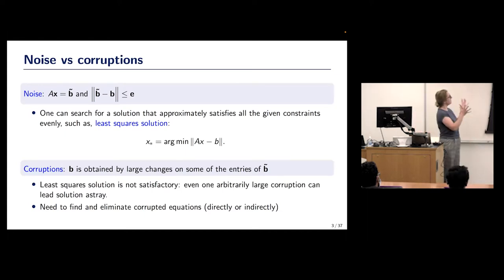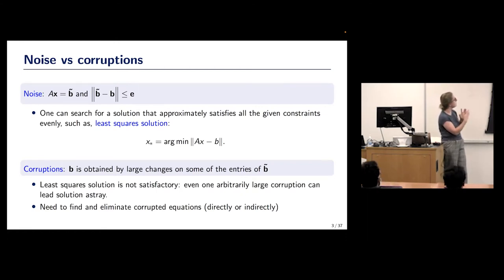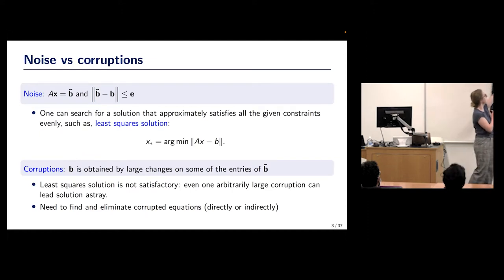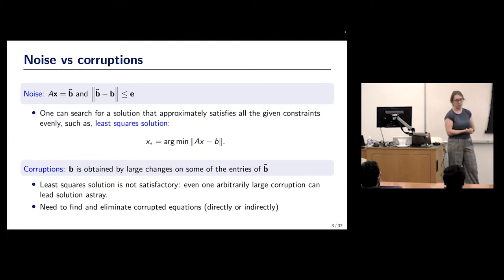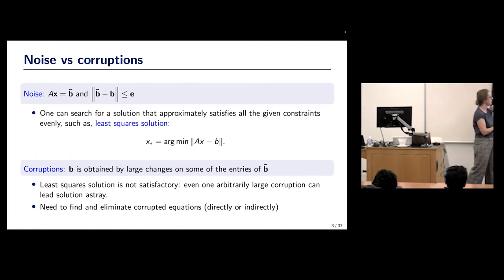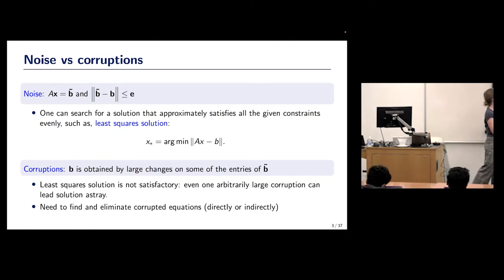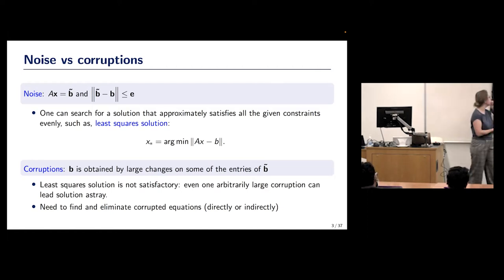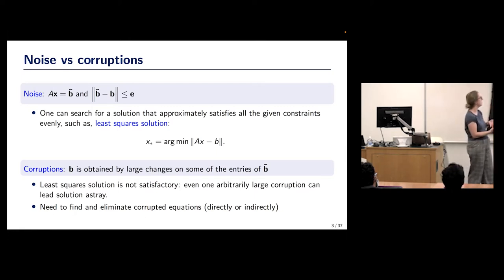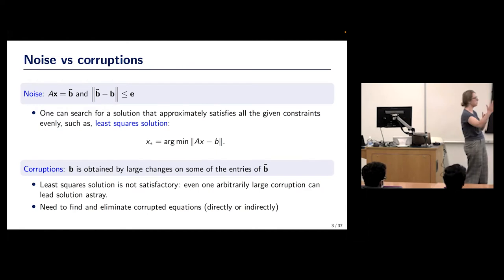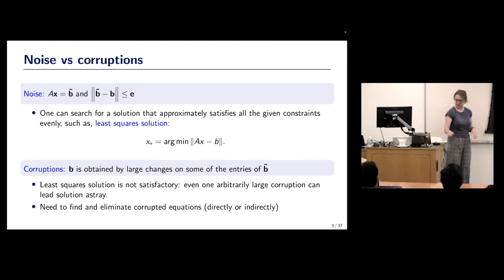That's another slide explaining again why we are not talking about least squares that much. This is how least squares appears for me: I want to solve my system and something can be wrong with it. For simplicity throughout my talk, something will be wrong only with the right-hand side. The error can be a small additive error, and then least squares is a good thing to do. But we could have sparse errors on the right-hand side — they can be adversarial.